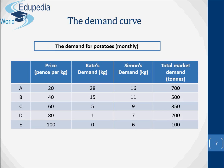Now let's talk about the demand curve. Consider the hypothetical data in this table, which shows how many kilograms of potatoes per month would be purchased at various prices. Columns two and three show the demand schedules for two individuals, Kate and Simon. Column four shows the total market demand schedule. To obtain the market demand schedule for potatoes, we simply add up the quantities demanded at each price by all consumers — Kate, Simon, and everyone else. Note that we are talking about demand over a period of time, not at a point in time — we could talk about daily, weekly, or annual demand.